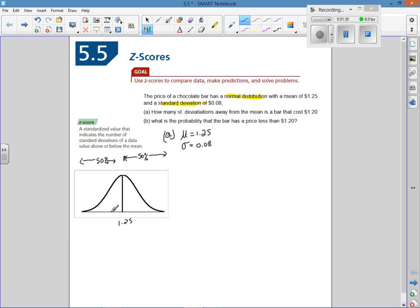One standard deviation below, we take our mean and subtract the standard deviation, which gives us a value of $1.17. This is within one standard deviation of the mean, and we know from the last section that 34% of all values should fall here. That means 34% of all bars should have a price between $1.17 and $1.25.